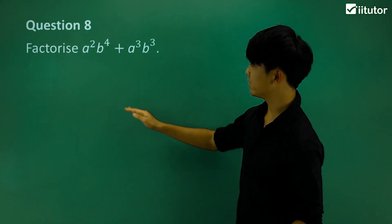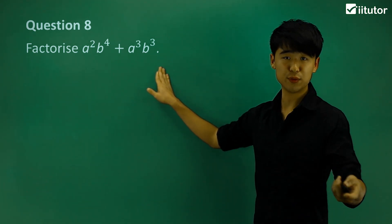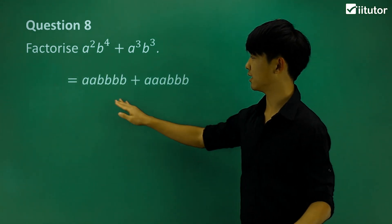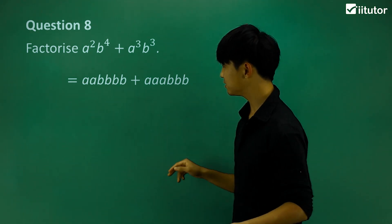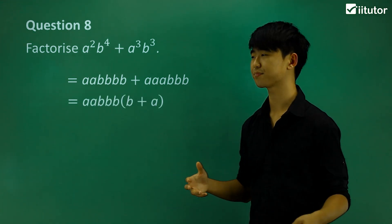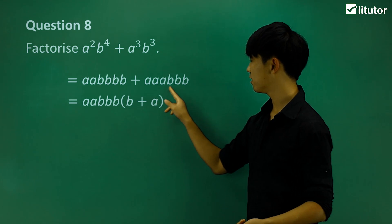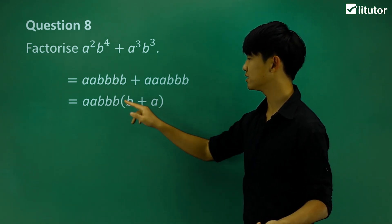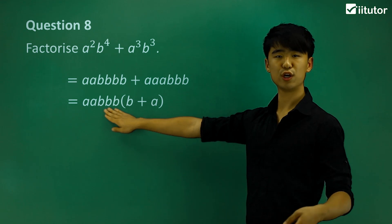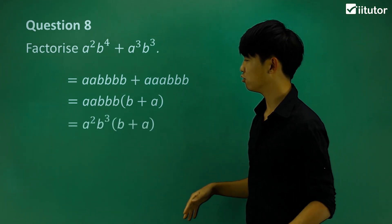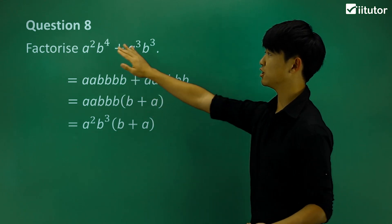Question 8: factorize A squared B to the power of 4 plus A cubed B cubed. Writing out all the factors to see what they both have — they both have As and Bs. The greatest common amount they share is two As and three Bs. What's left? On one side B is left, on the other side A is left. In proper algebra notation, we write the answer as A squared B cubed bracket B plus A bracket. That is the factorized version.